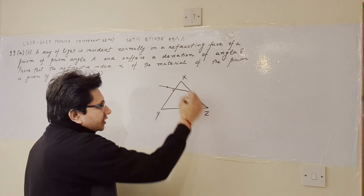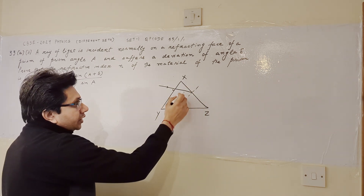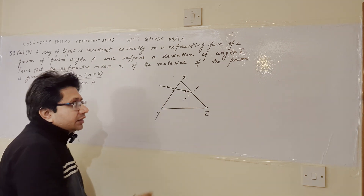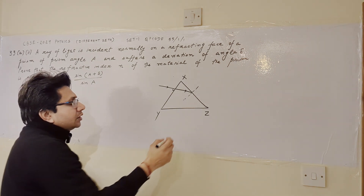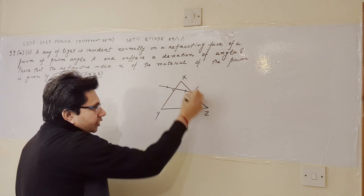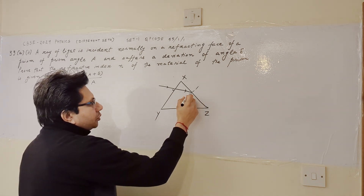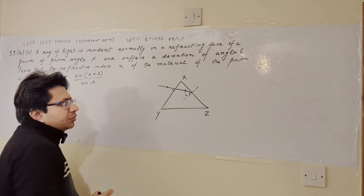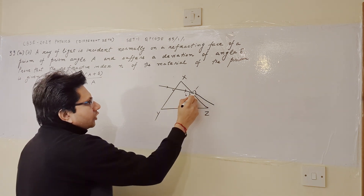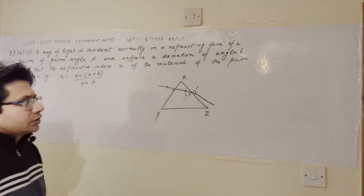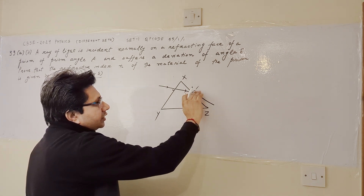At the second interface XZ, the ray encounters the glass-air boundary again. This time, the ray is not at 90 degrees — it strikes at an oblique angle. When a ray hits a surface at an oblique angle, it deviates from its natural path. If the angle the ray makes with the normal at this surface is i, then the ray bends away from the normal.